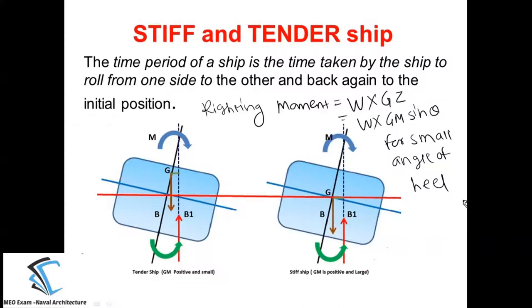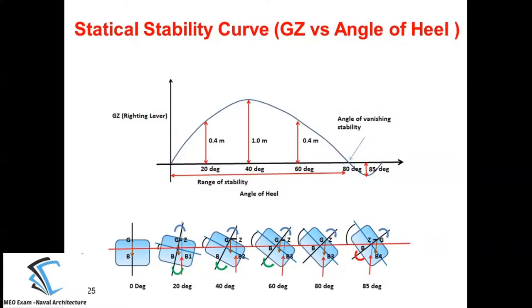The next topic of today's discussion is the Statical Stability Curve, which we generally call the GZ versus Angle of Heel curve. You can see the curve in front of you — this is called the Statical Stability Curve. On the x-axis you have the angle of heel (in degrees), and on the y-axis you have the righting lever GZ (generally in meters).